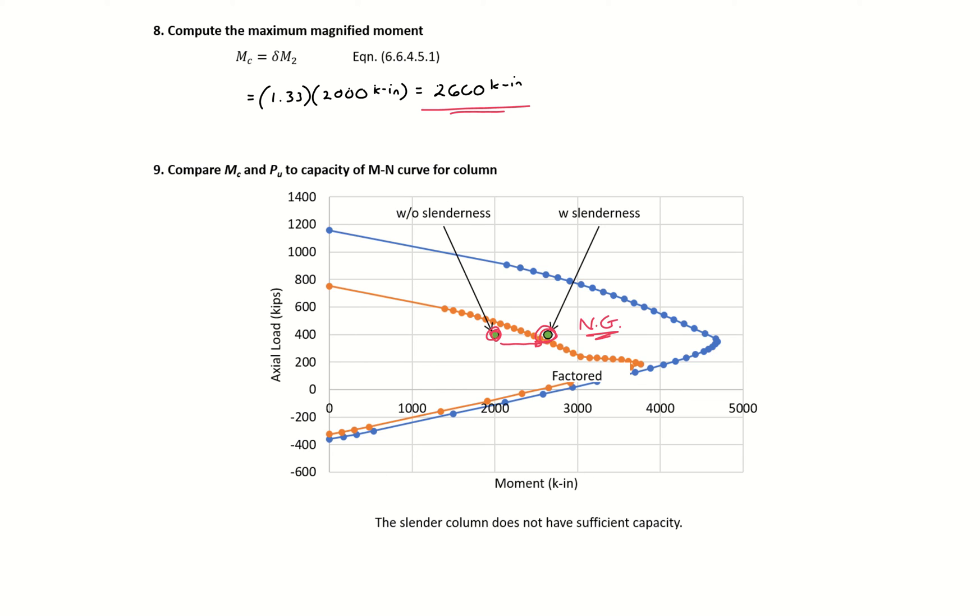This means we either need to add intermediate bracing to decrease our effective length to make sure slenderness isn't a factor, or we need to modify the design of our section. Either way, we need to change the design for this column. That concludes this example problem.